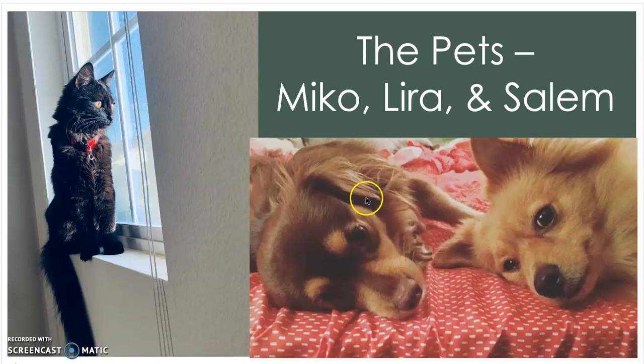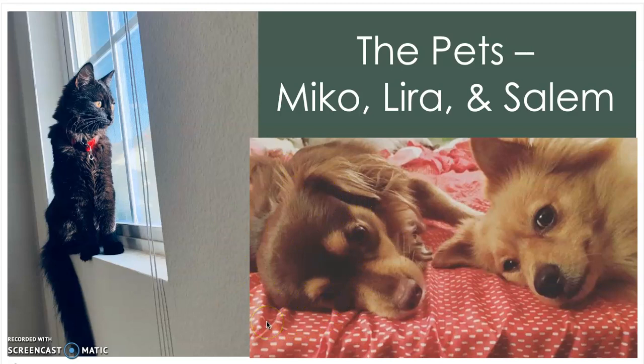Speaking of dogs, this is Miko right here. She is my mom's dog — a chihuahua and wiener dog mix. She is about 6 years old, which is 42 in dog years, and she is very protective of her family. She loves to play and loves showing off her toys.